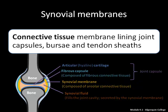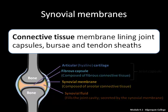Synovial membranes are connective tissue membranes lining joint capsules, bursae, and tendon sheaths. In this example, the synovial membrane is lining a joint capsule. The articular or hyaline cartilage covers the ends of the bones. The fibrous capsule contains both the ends of the bone and the synovial membrane, and is composed of fibrous connective tissue; together with the articular cartilage, it forms the joint capsule. The synovial membrane is found immediately internal to the fibrous capsule, composed of areolar connective tissue, and secretes the synovial fluid which fills the inside of the joint cavity.